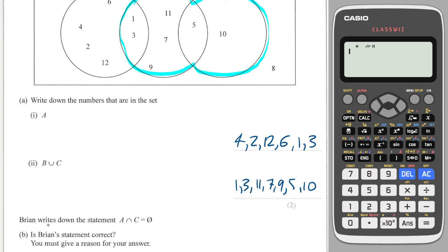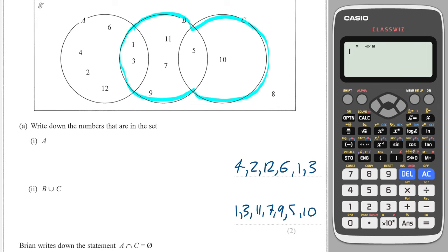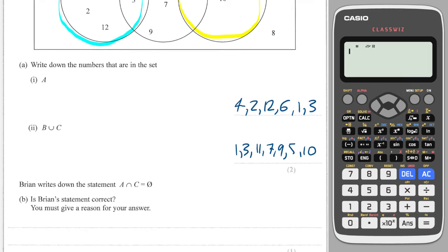And then, it says, Brian writes down a statement that A intersection C is empty. Is he correct? Well, yes, he is correct because there are no elements which are in A and C simultaneously because C is all the way over here and A is all the way over there. So the answer is yes, A and C do not intersect.